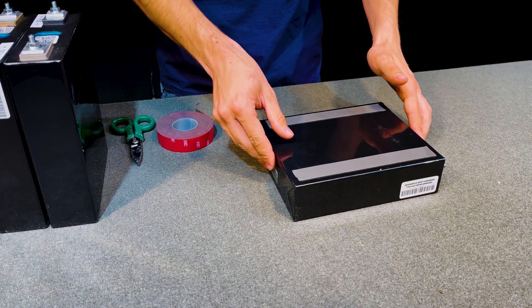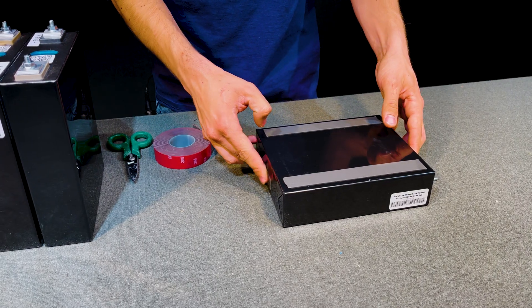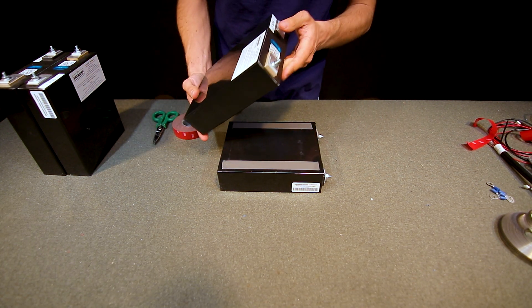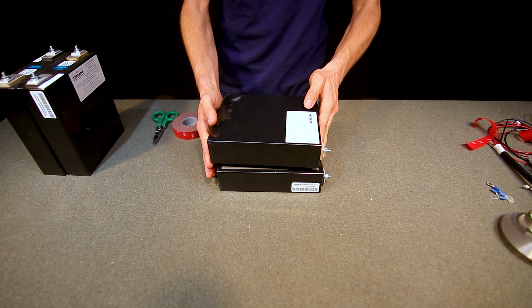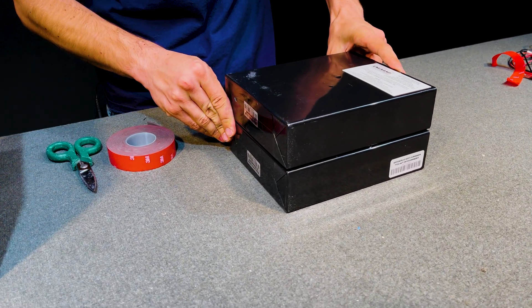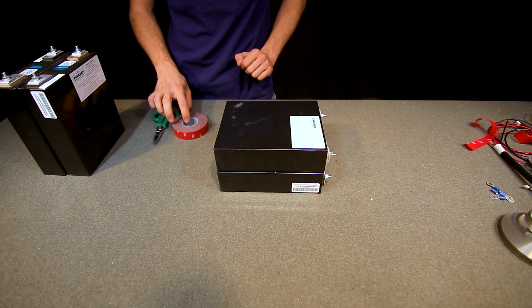Now it is very important to make sure we get the right negative to positive configuration. So I have positive on this side and with this next cell I'm going to put negative on that side maintaining the same staggering configuration. Once this VHB tape is set there is no going back. Now I'm going to continue two more times for the next two cells.